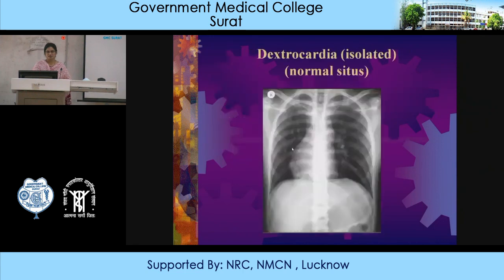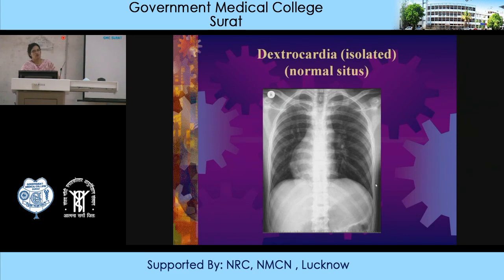This is a case of dextrocardia — whenever you find on a frontal chest X-ray that the heart is situated on the right side (on the side of the right marker), you must confirm whether there is a problem with the marker or there is dextrocardia. You can see the liver is on the right side and the stomach bubble is on the left side — so abdominal situs is normal while there is just dextrocardia. Thank you for your kind attention.